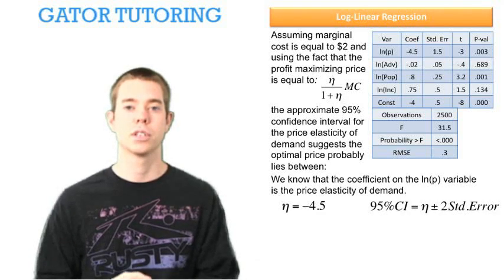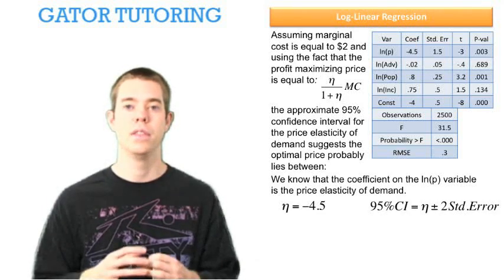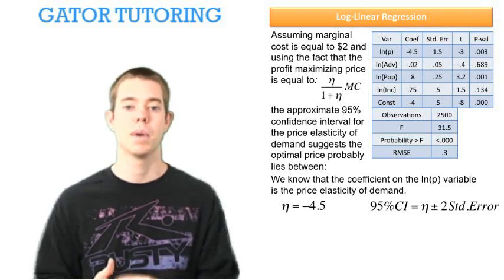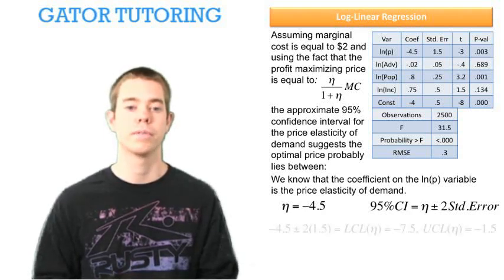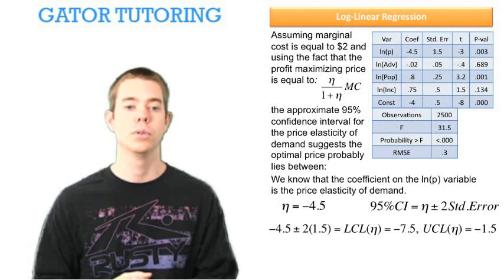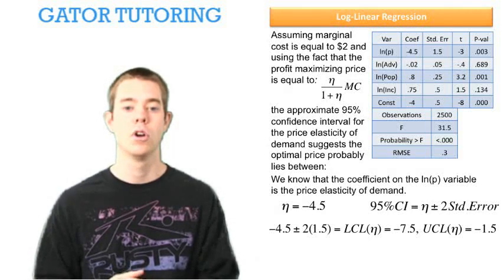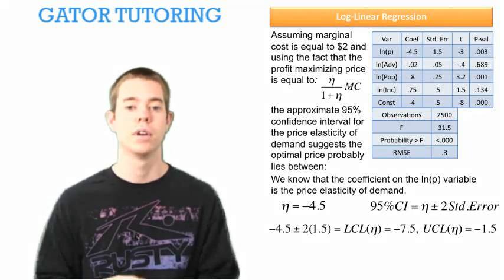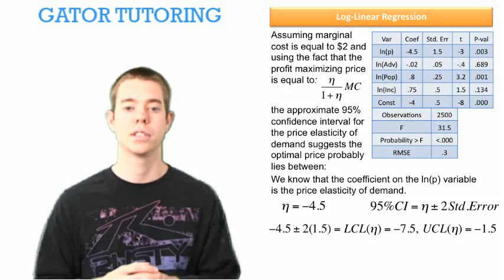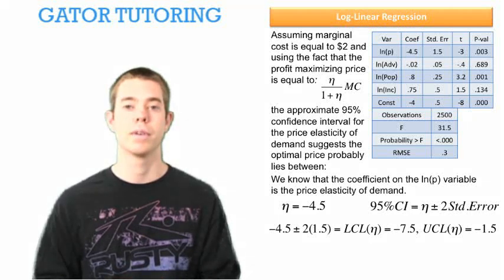We know that the 95% confidence interval is going to be the elasticity plus and minus two times that variable's standard error, which in this case is 1.5. So when we do negative 4.5 plus and minus two times 1.5, we find that our lower control limit of the elasticity is negative 7.5 and our upper control limit is negative 1.5.